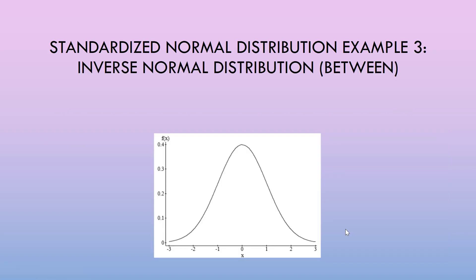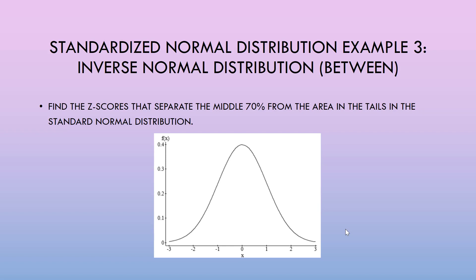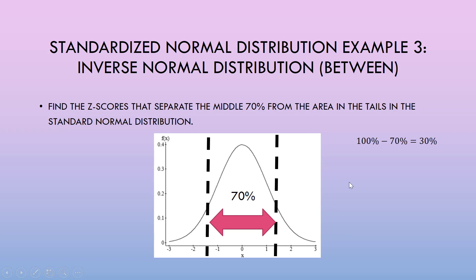Let's do a third example. Find the z-scores that separate the middle 70% from the area in the tails in the standard normal distribution. We need two lines dividing the middle 70% from the rest. The remaining area is 100 minus 70, or 30%, divided evenly between the two tails — 15% to the left and 15% to the right of the middle region, still summing to 100%.